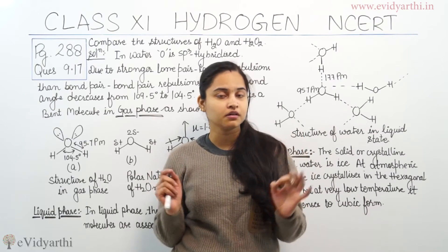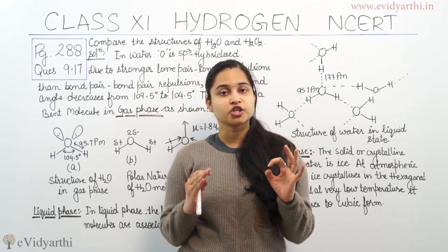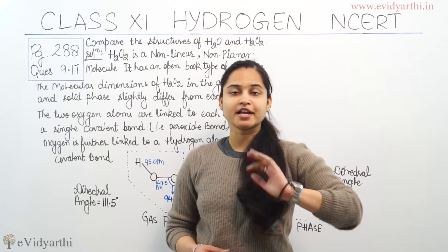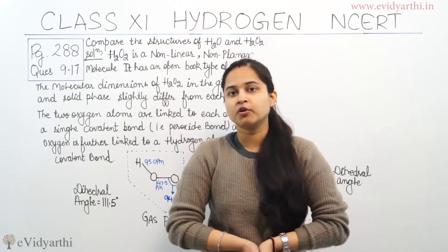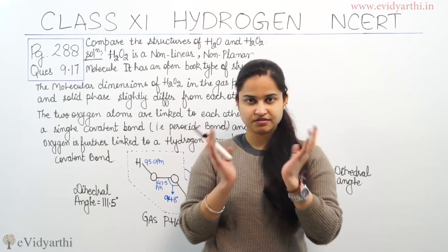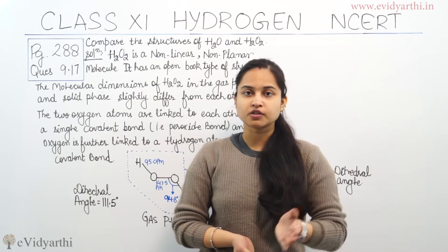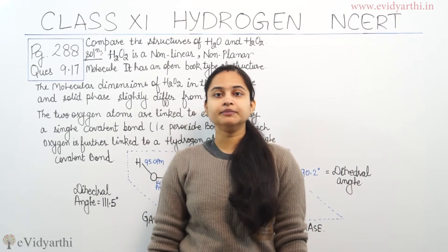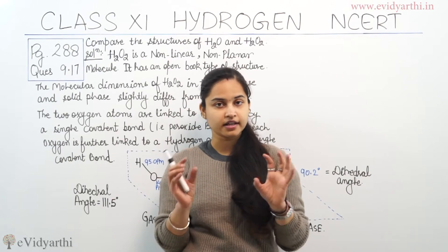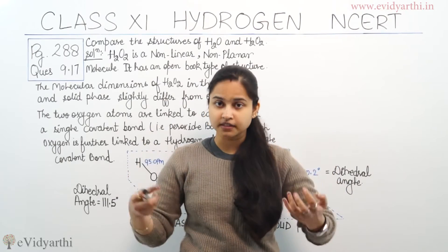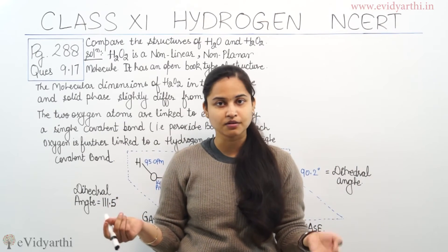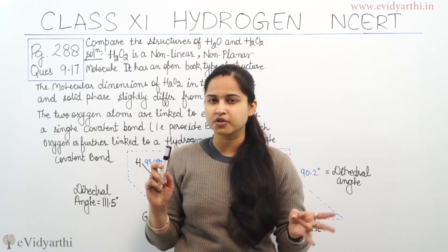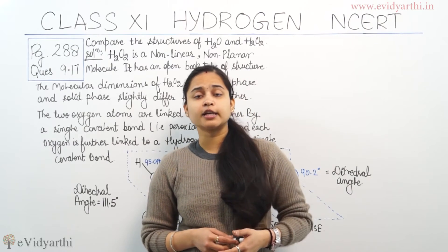Now moving on to the structure explanation for H2O2, that means hydrogen peroxide. H2O2 is a non-linear, non-planar molecule. Its structure is an open-book type structure. The two oxygen atoms are linked to each other by a single covalent bond, and these oxygen atoms are further linked to hydrogen atoms by a single covalent bond. The two dihedral angles are different.